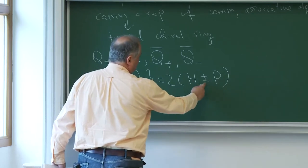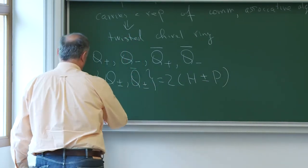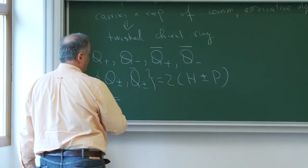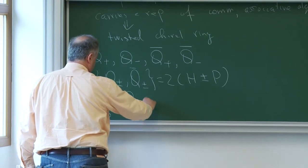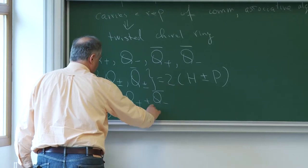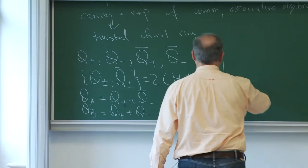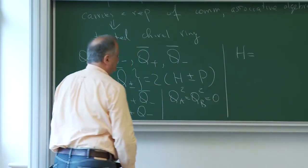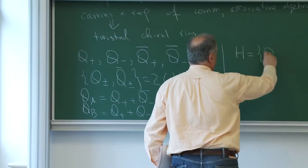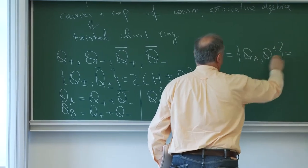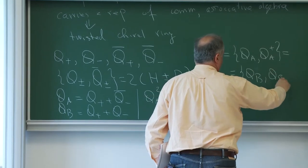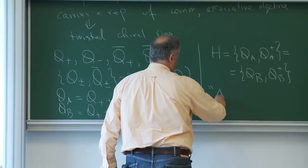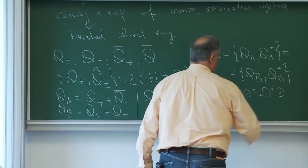If we want to write the Hamiltonian and cancel the plus-minus translation, we can introduce two linear combinations: Q_A equals Q-plus plus Q-minus-bar, and Q_B equals Q-plus plus Q-minus. With this notation, you can check that Q_A squared equals zero and Q_B squared equals zero as a consequence of the supersymmetric algebra. You can also check that the Hamiltonian is harmonic in both, written as Q_A-bar or Q_B-cubic-bar, comparing to the Laplacian: d d-dagger plus d-dagger d, with d-squared zero.